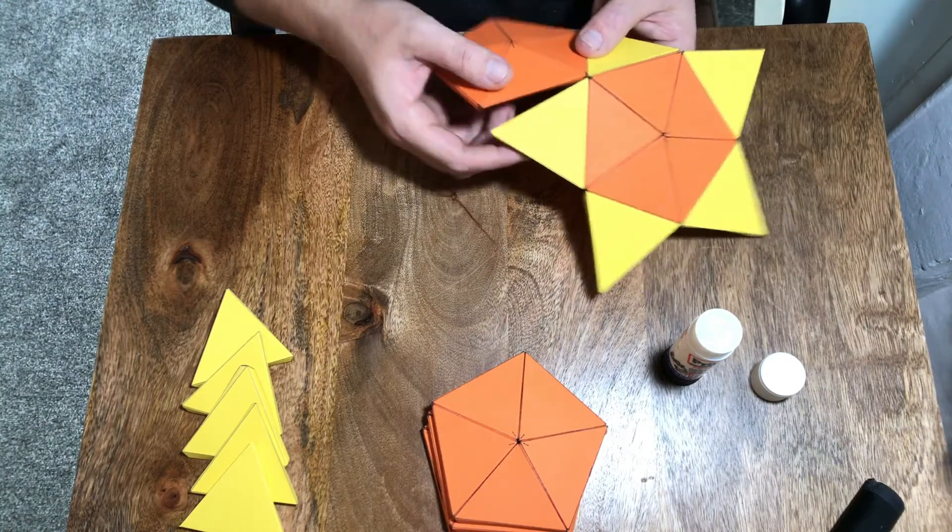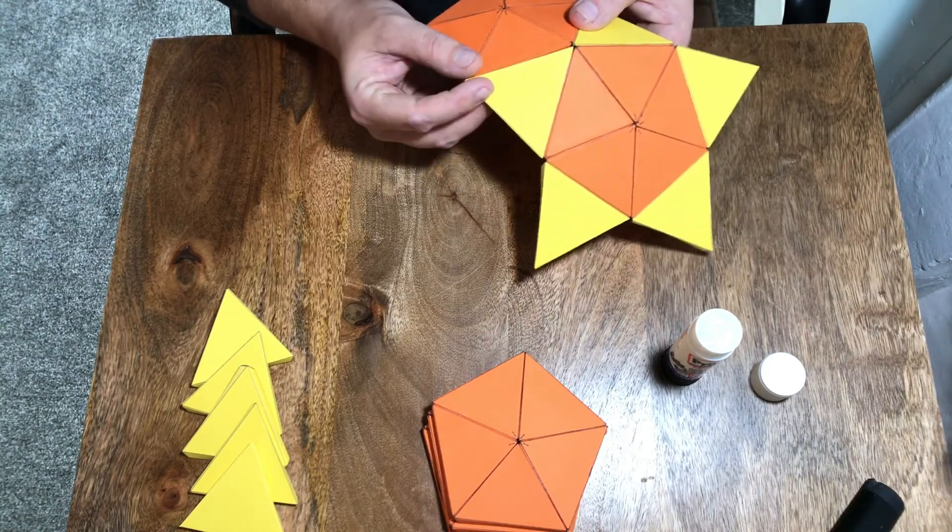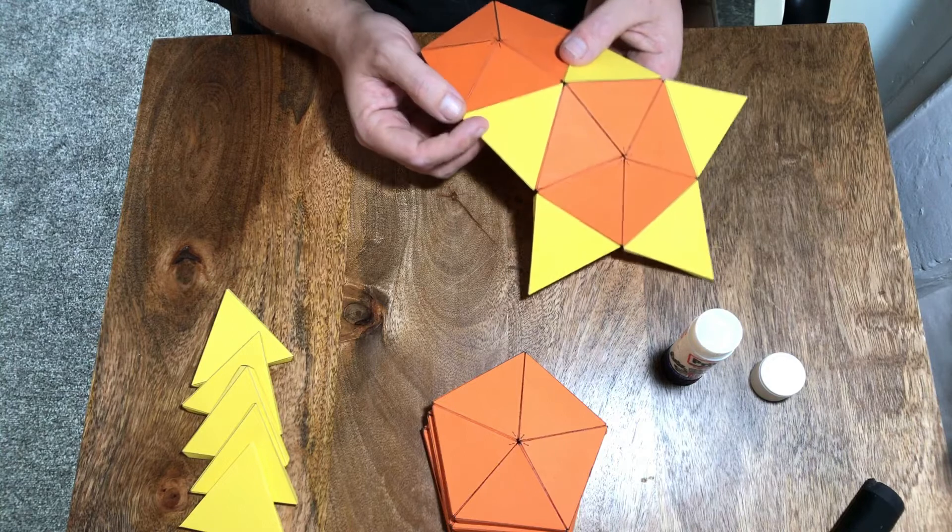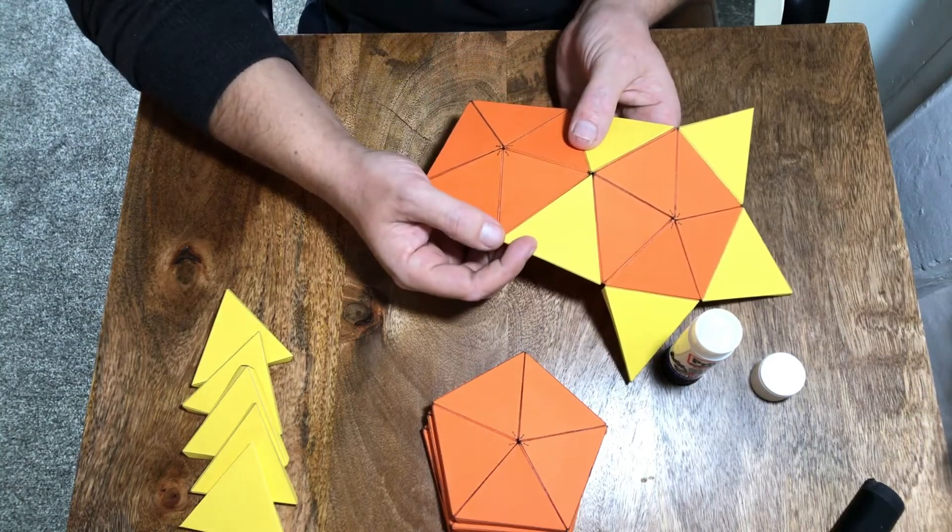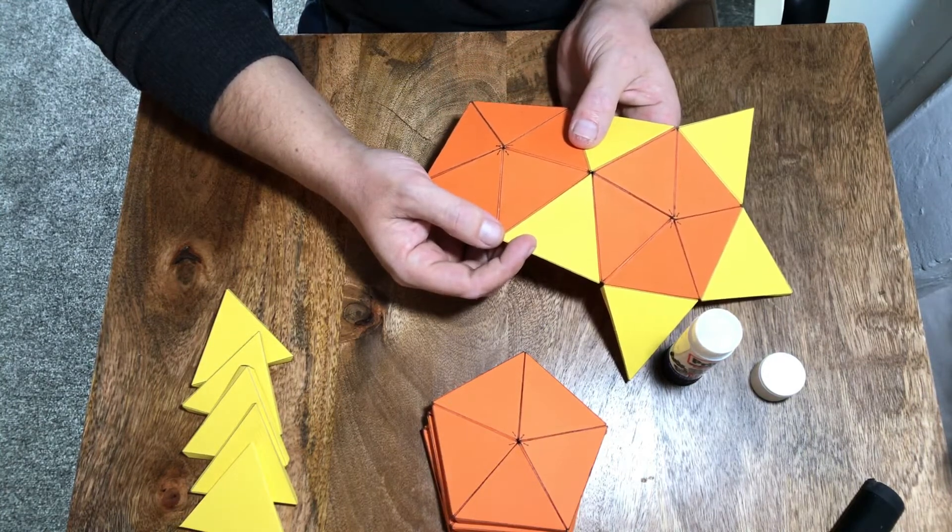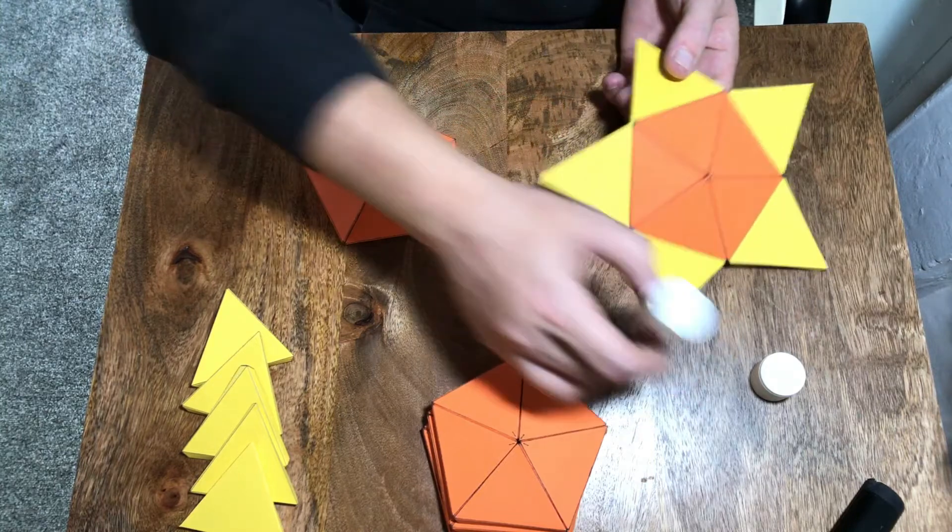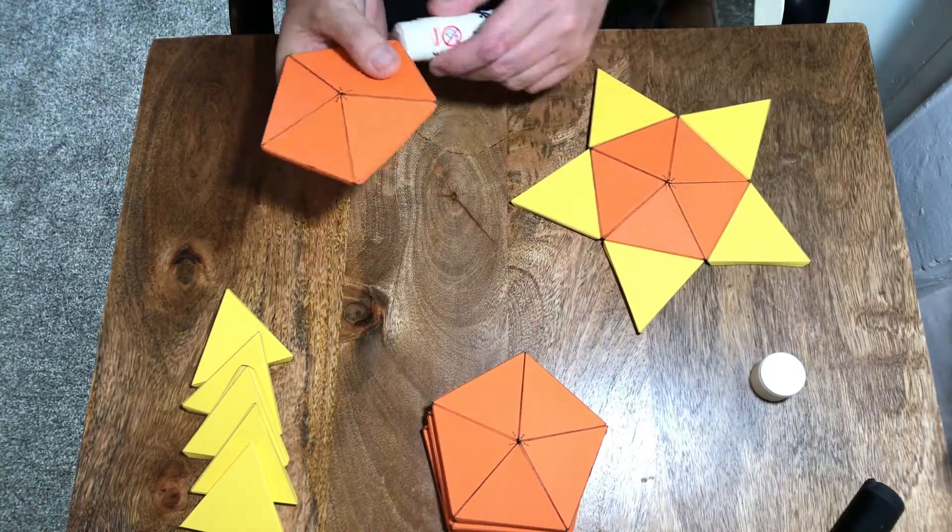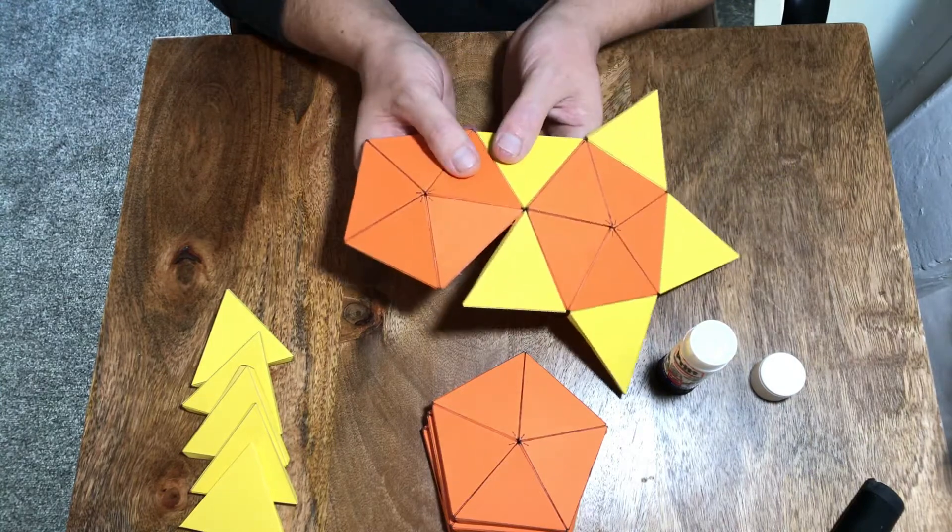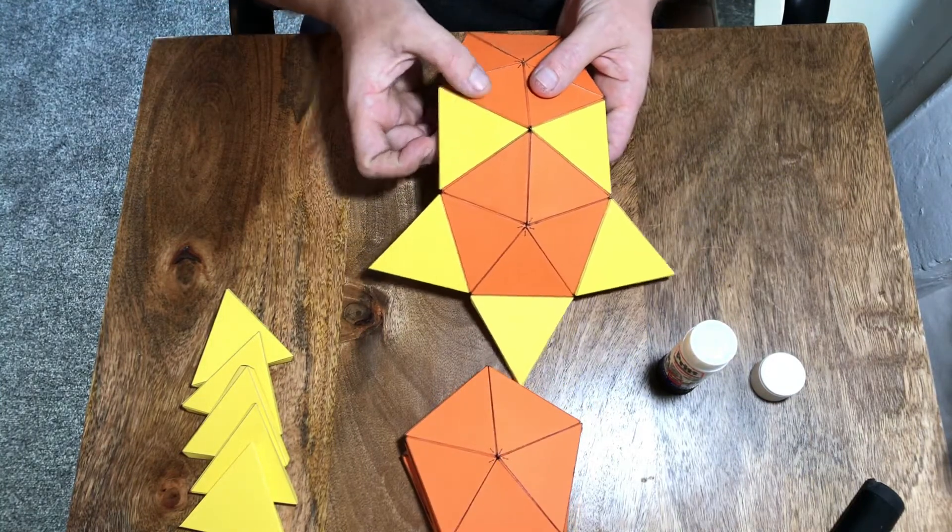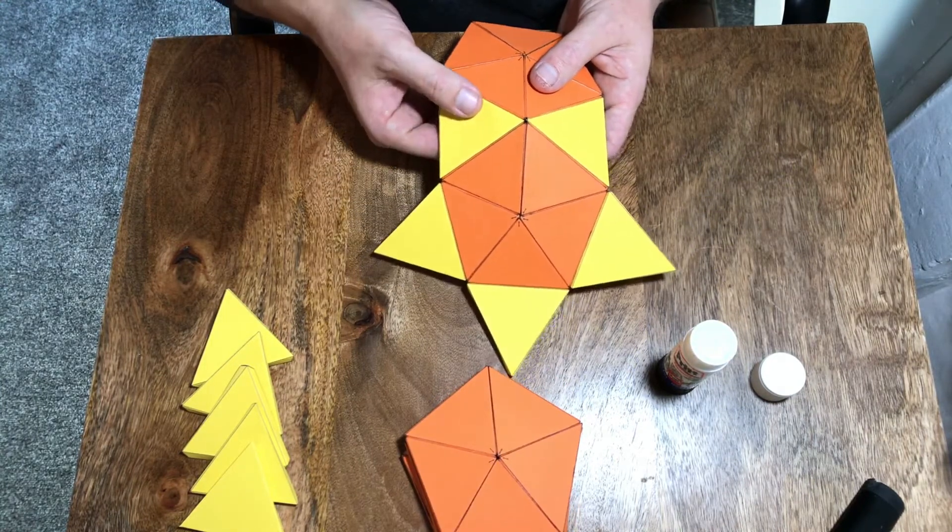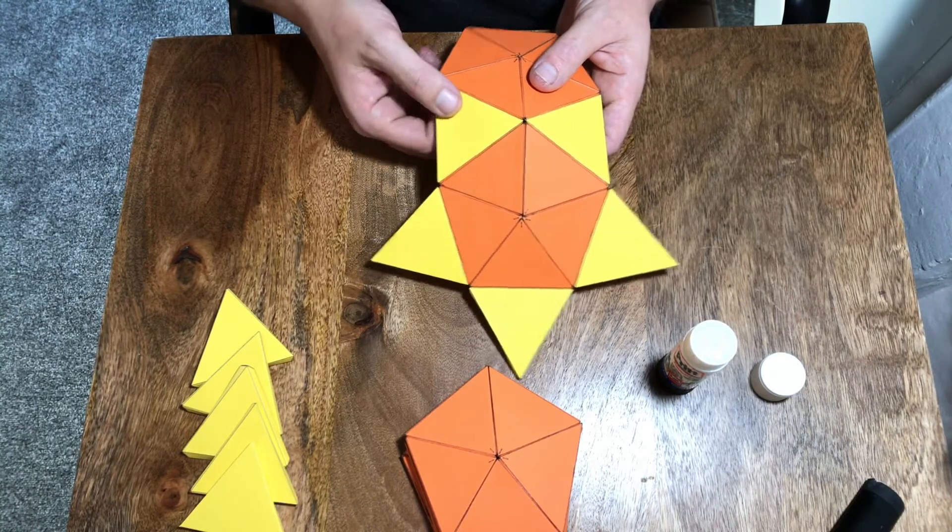So it's going to attach to two of our yellow pieces like so. Let me just get that in frame a little bit better for you. So that's going to be the next step. I'm going to choose to apply the glue to the pentagon. And you can see we've done a fair bit of preparation work but now things are going to start taking shape really quickly.